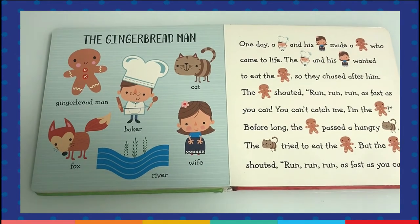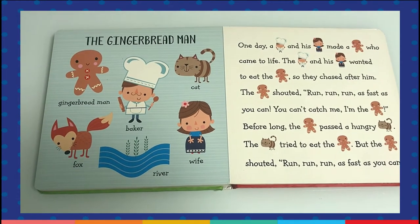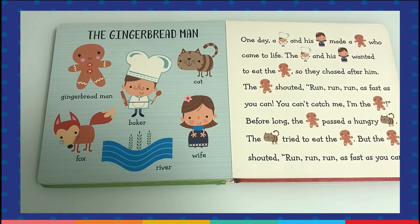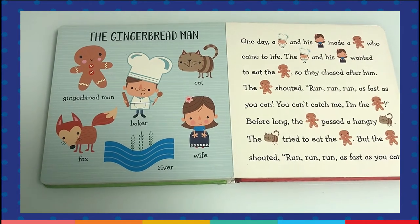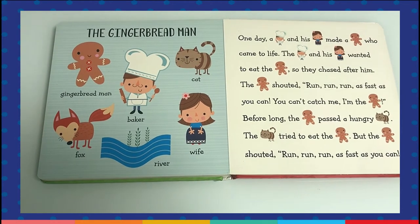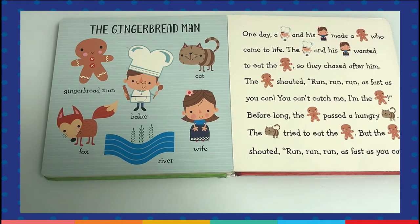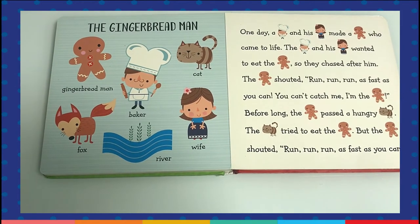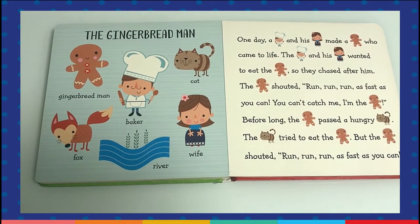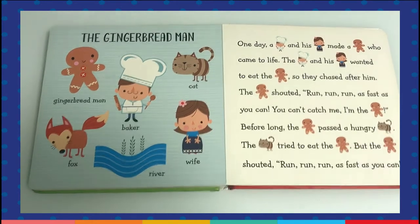The first one is the Gingerbread Man. Then we'll see the baker. Then there's a cat. Then there is a fox, a river, and a wife. Now let's go to the story.